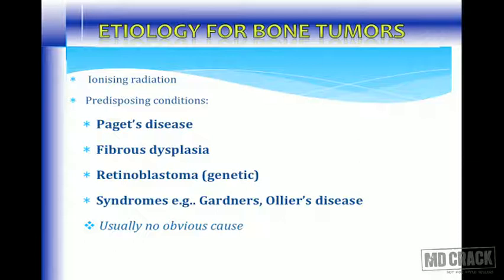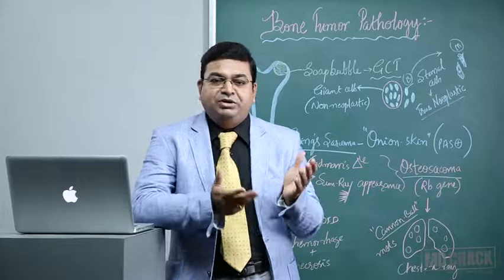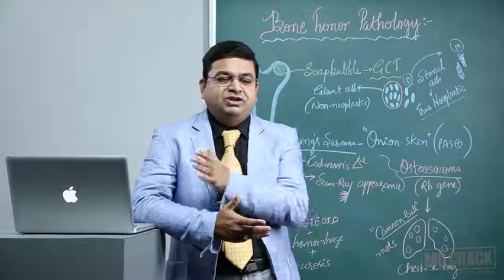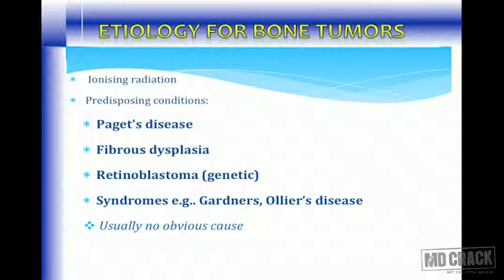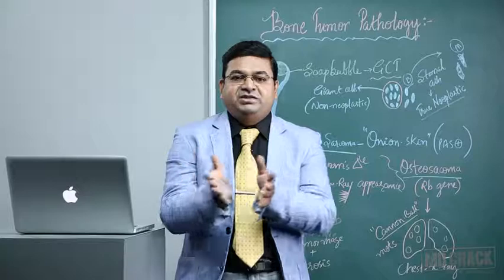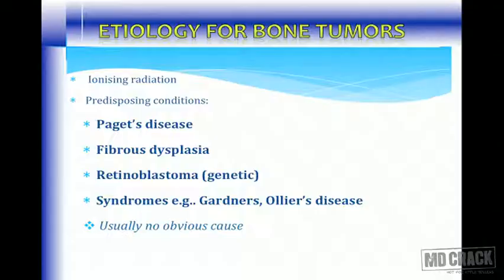Genes play a very important role, especially the retinoblastoma gene. Any child who develops retinoblastoma at around two years of age — warn the parents: if the child develops a bony swelling later in life, bring the child as early as possible, because osteosarcoma and retinoblastoma are both due to RB gene mutations. Variety of syndromes include Gardner syndrome and Ollier's syndrome. Most of the time it is tumor suppressor gene inactivation, but in certain cases we may not find any obvious cause.